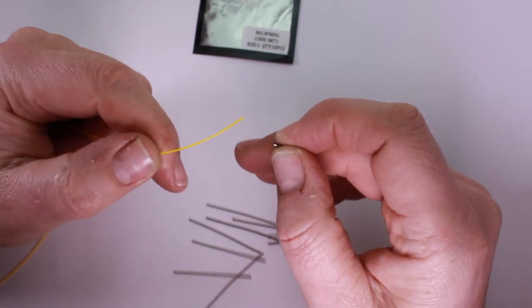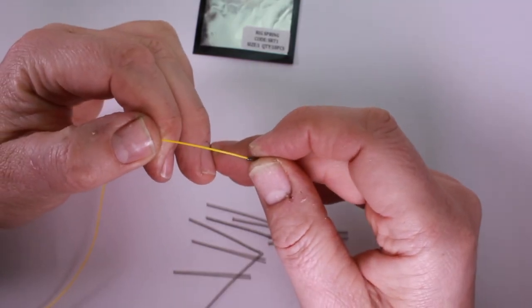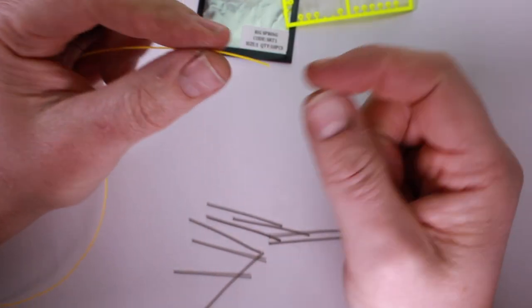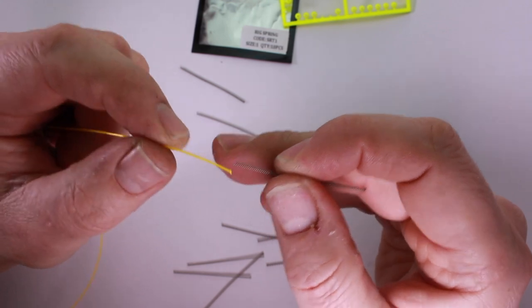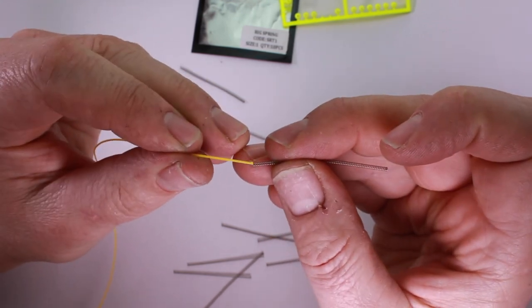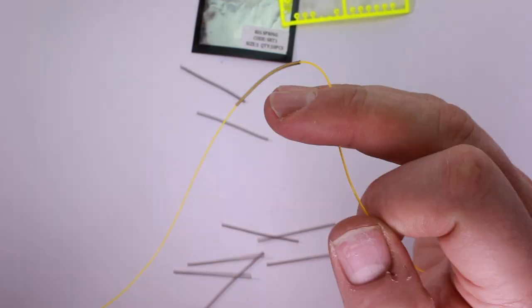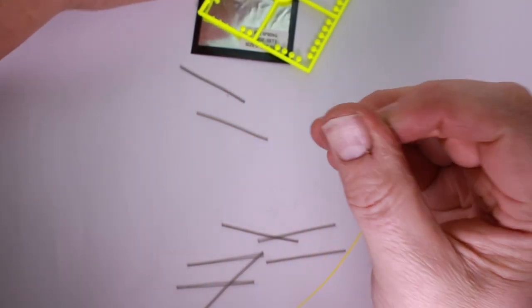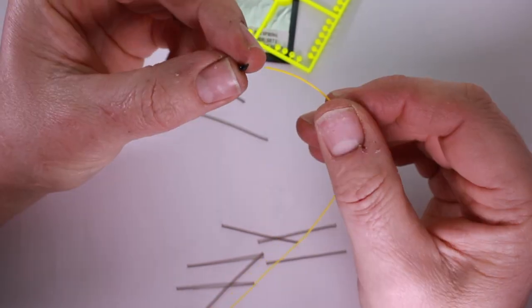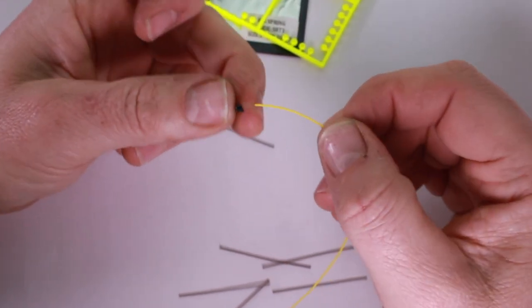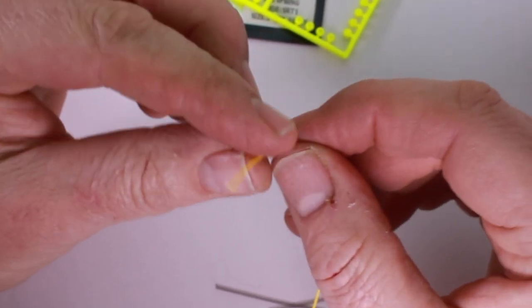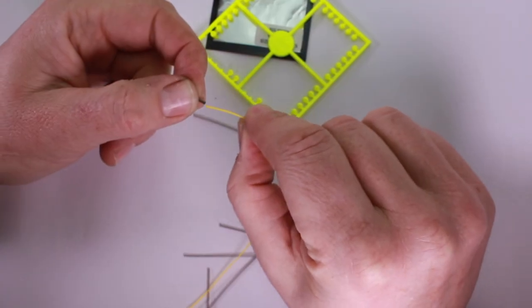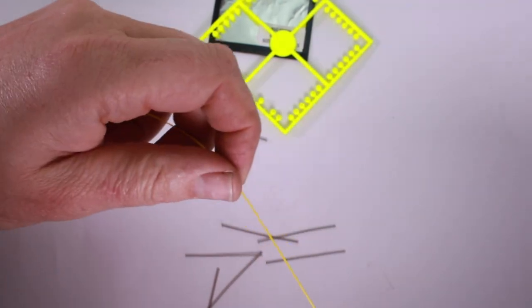And then you're going to replicate that again for the other hook snood basically. But you're going to go a crimp first and then another bead, and then a spring, another bead, a swivel, a bead for the other side of the swivel, and then the last crimp. And then before you tie the other end, just have a check what's going on down here.